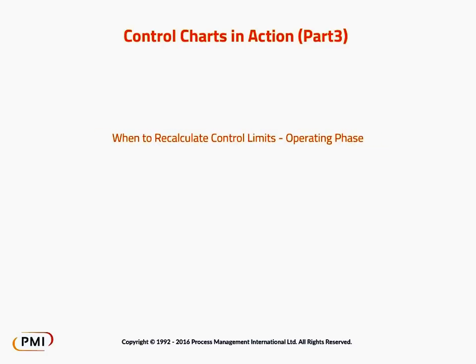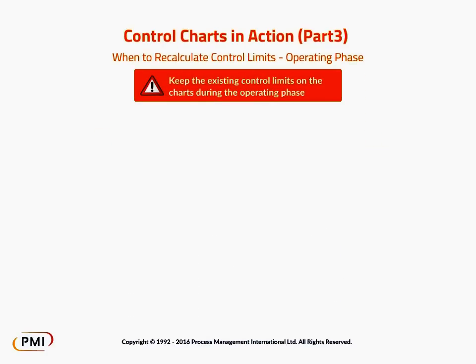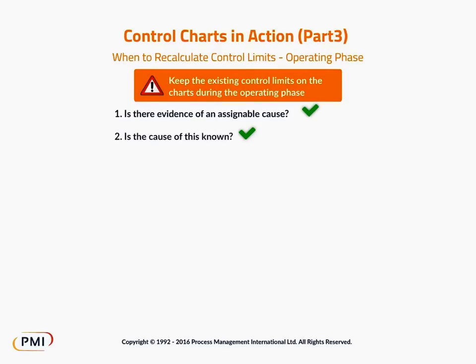It's important to keep the existing control limits on the charts during the operating phase. They can only be recalculated when the answer to all of the following four questions is yes: 1. Is there evidence of an assignable cause? 2. Is the cause of this known? 3. Is the change in the process an improvement — desirable? And 4. Is the change sustainable?